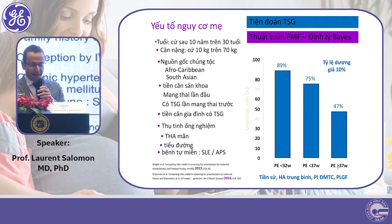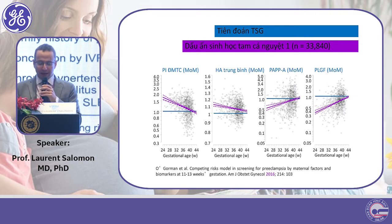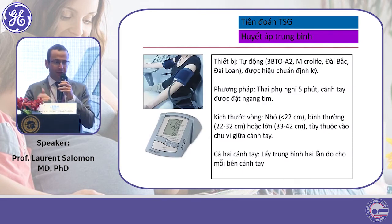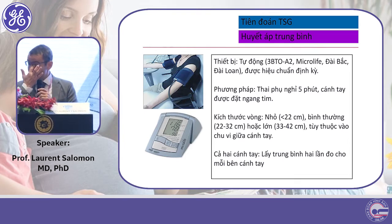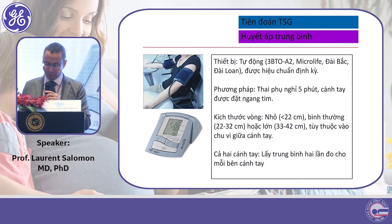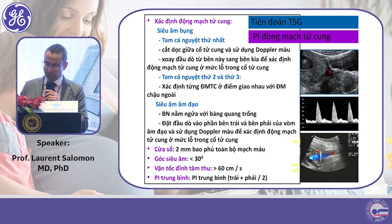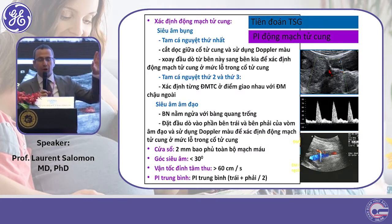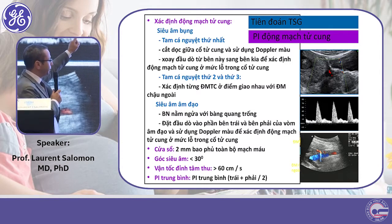This model is based on maternal risk factors as well as biomarkers, as well as the measurement of mean arterial pressure — which also has to be measured in a very standardized manner. All these factors are combined with the ultrasound measurement of the mean uterine artery PI, which again has to be performed in a very standardized manner. This standardization is described on that slide, and you should refer to it often to check that you do it properly.